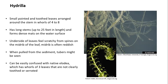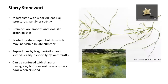There's one other invasive that looks similar to hydrilla and elodea to keep an eye out for — Brazilian waterweed. And then starry stonewort, which is a macroalgae but very plant-like. It has leaf-like structures and is very gangly and stringy when pulled from the water. The branches are smooth and look like green gelatin. It's rooted by star-shaped bulbils which may be visible in late summer. This plant reproduces really easily by fragmentation — all it takes is a piece attached to a watercraft entering another water body to start a new infestation. That's why it's really important to clean, drain, and dry your boats when moving between water bodies.